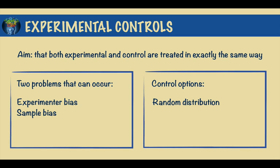First is a random distribution procedure where participants are randomly assigned to one group or the other. A placebo is an inactive substance and is another control option often used in drug research.